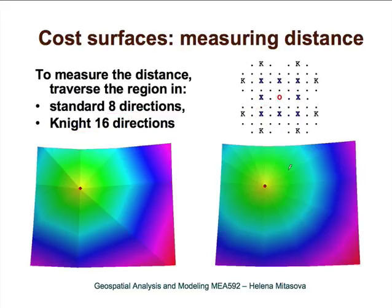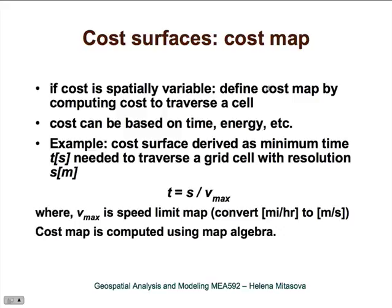What happens if cost is spatially variable? We need to define it by a cost map. A good example is a cost surface derived as the minimum time needed to traverse a grid cell with resolution S. The time is the size of the cell divided by the speed limit — meaning the minimum time required would be driving at the speed limit. We can compute this map using map algebra.